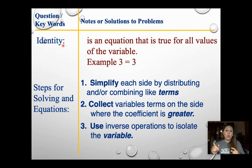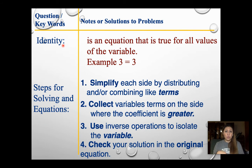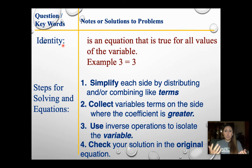Step three is the upside down T — using inverse operations to isolate the variable. And then the last step: you should always check your equation by plugging your answer back in to see if it gives you a true statement. So those are our four steps: distribute or combine like terms, move the smaller variable to the bigger side, do the inverse operation with the upside down T, then check your answers.